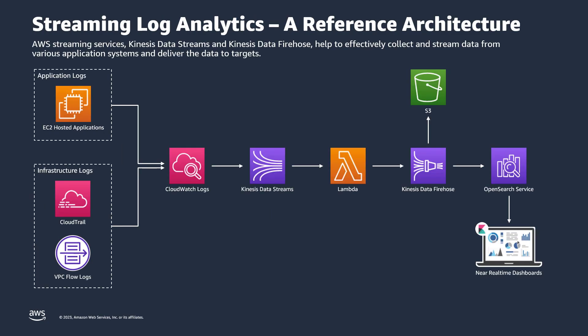Together, AWS Streaming Services — Kinesis Data Streams, or KDS — and Kinesis Data Firehose create a framework that addresses log system management challenges by effectively collecting and streaming data from various application systems and delivering to targets.